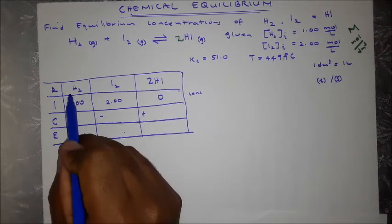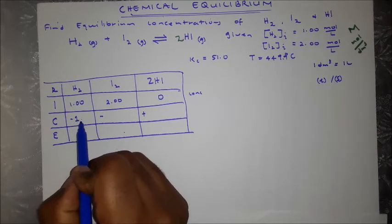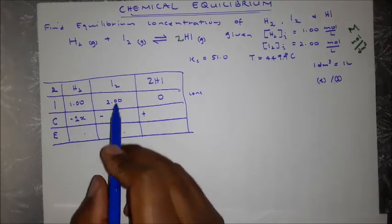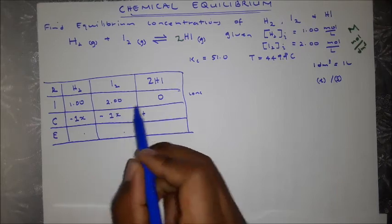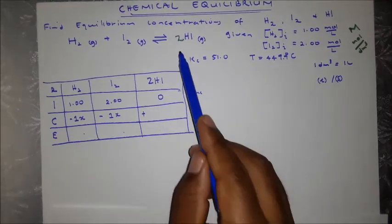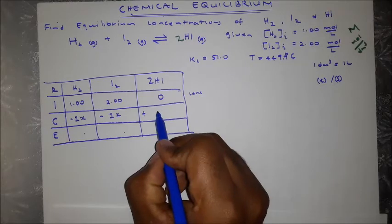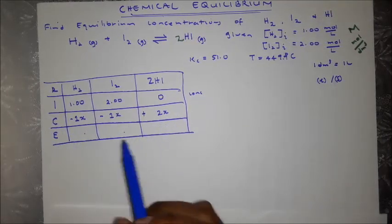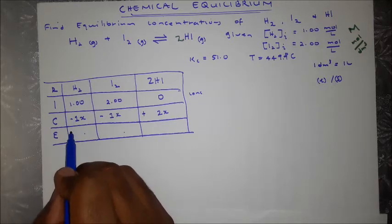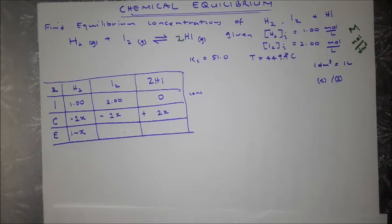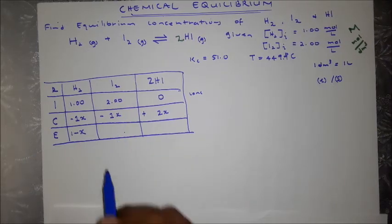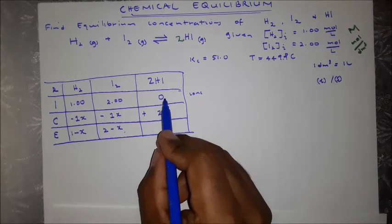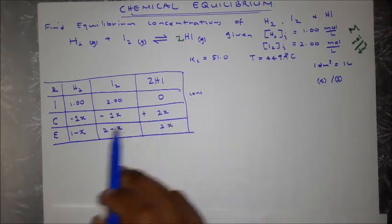We don't know exactly how much the concentrations change, so we introduce a variable x. The balancing coefficient for H₂ is 1, so the change is −x. Similarly for I₂ the change is −x, and for HI the coefficient is 2, so the change is +2x. The equilibrium concentrations become: [H₂] = 1 − x, [I₂] = 2 − x, and [HI] = 2x.